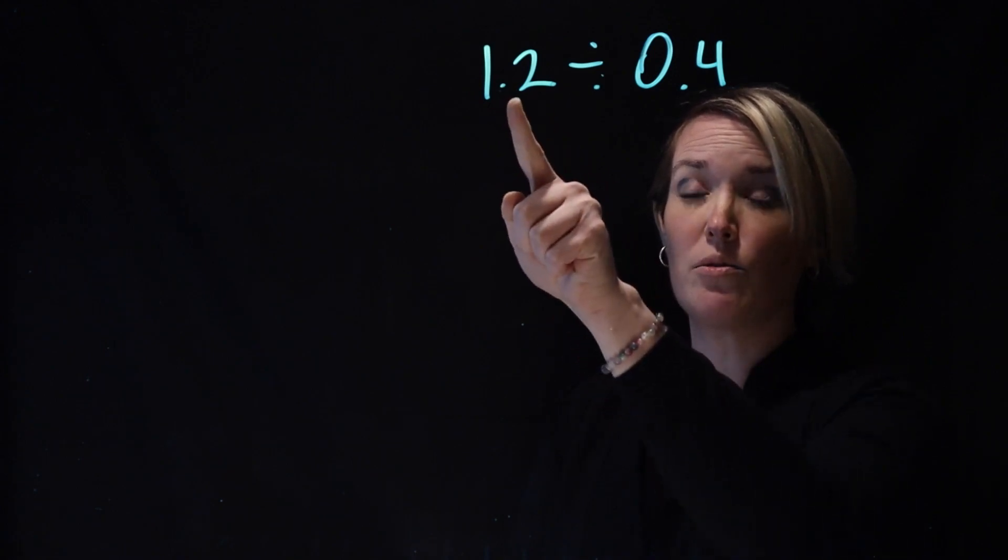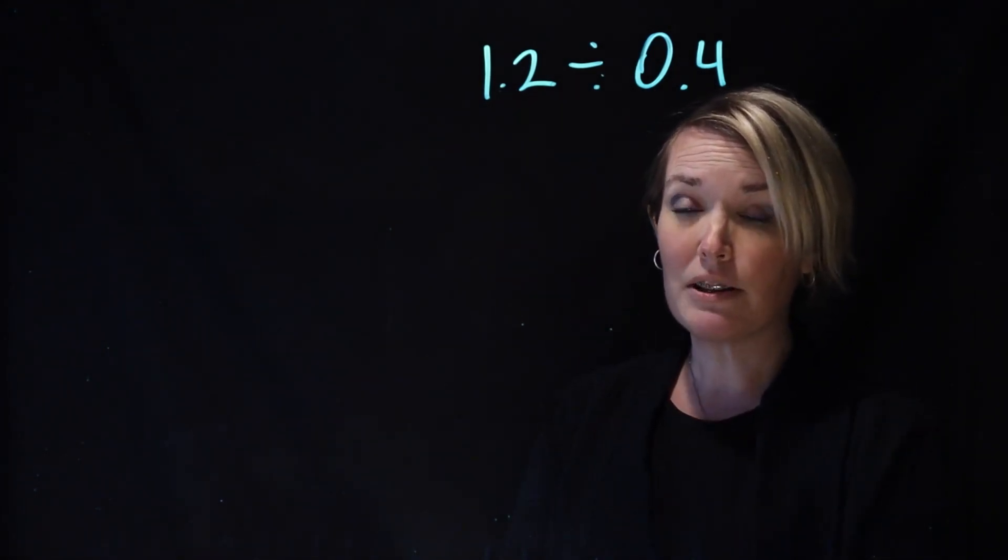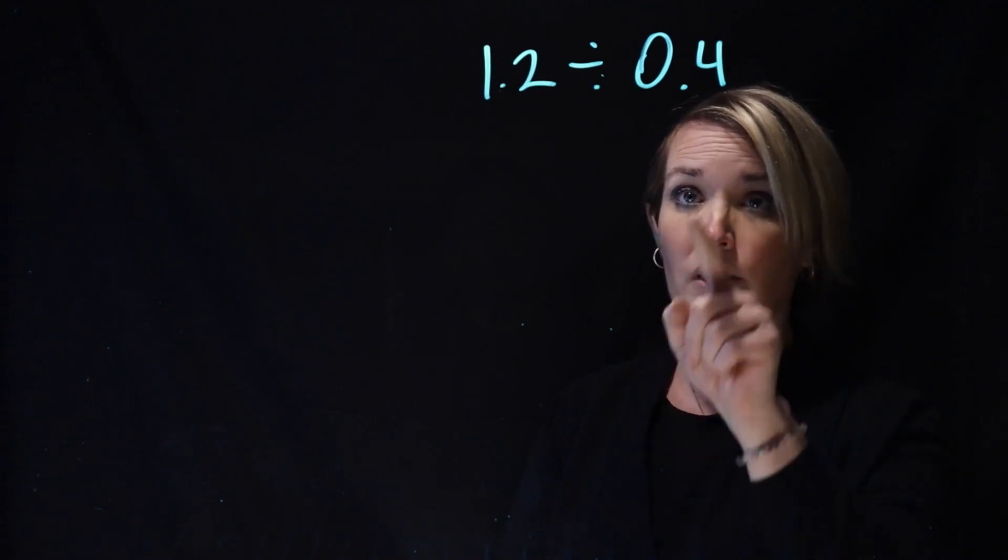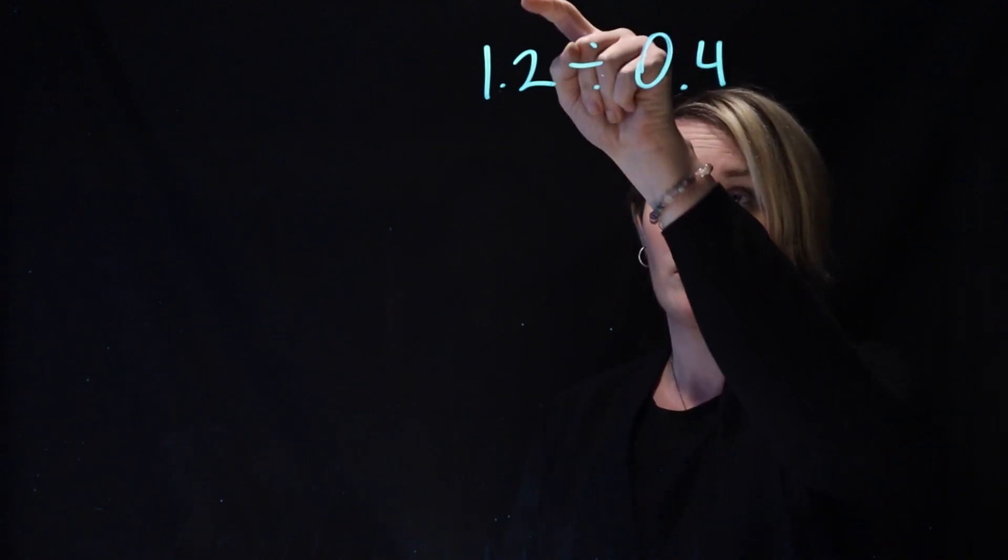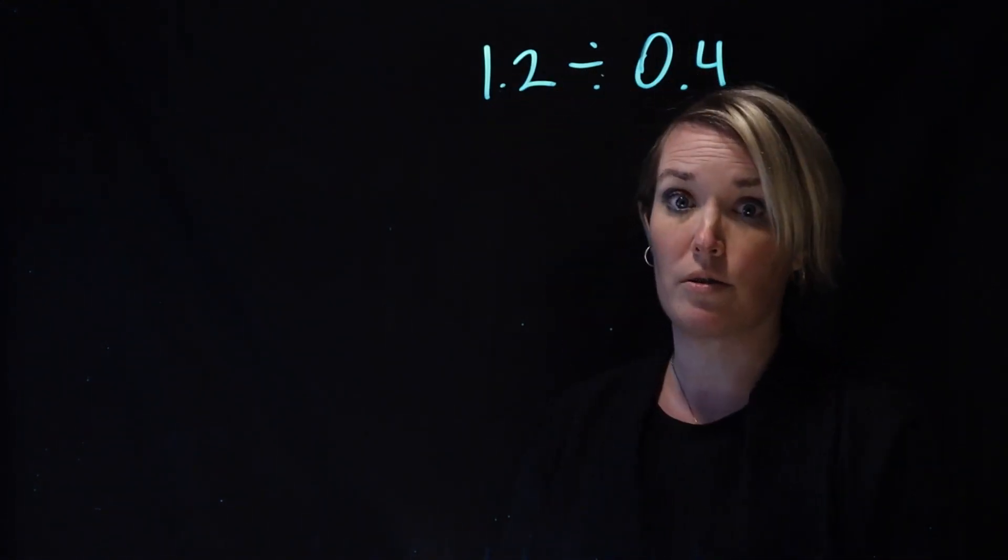She said, look, $1.20 divided by 40 cents. She said this makes a lot of sense because all she has to do is figure out how many times this goes into that. So how many times does 40 cents go into $1.20?